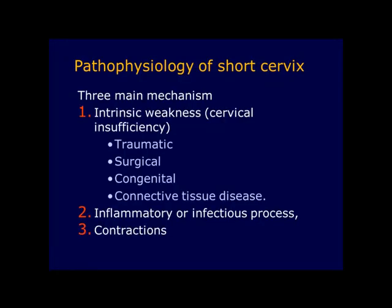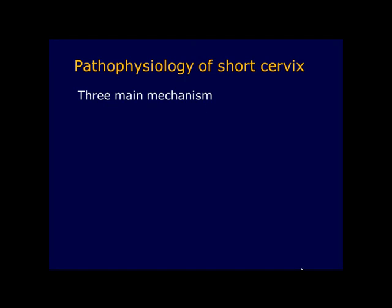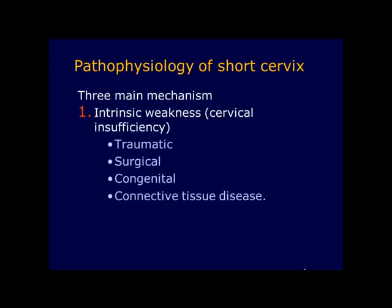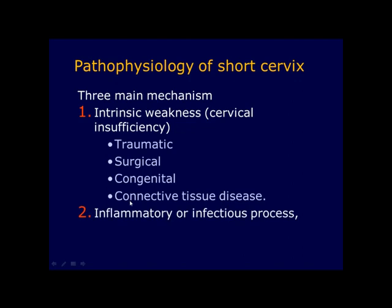There are three main mechanisms associated with the development of short cervical length. The first is intrinsic weakness of the cervix, or cervical insufficiency, most often due to traumatic or surgical damage, and rarely due to congenital disorders or connective tissue disease. The second is an inflammatory or infectious process — there is a strong association between short cervical length on transvaginal ultrasound and infection. The third is that contractions may cause short cervical length; studies show the majority of asymptomatic women with cervical length less than 25 mm before 24 weeks have more contractions than those with a normal cervix.